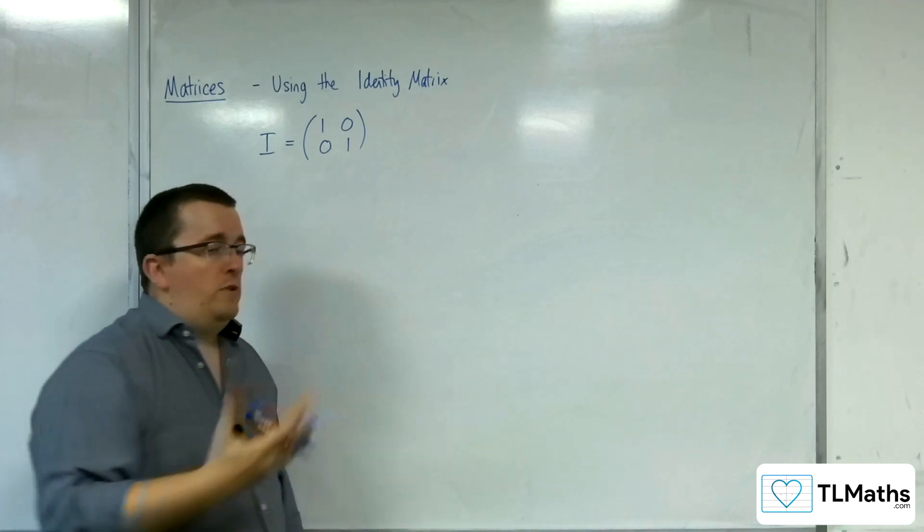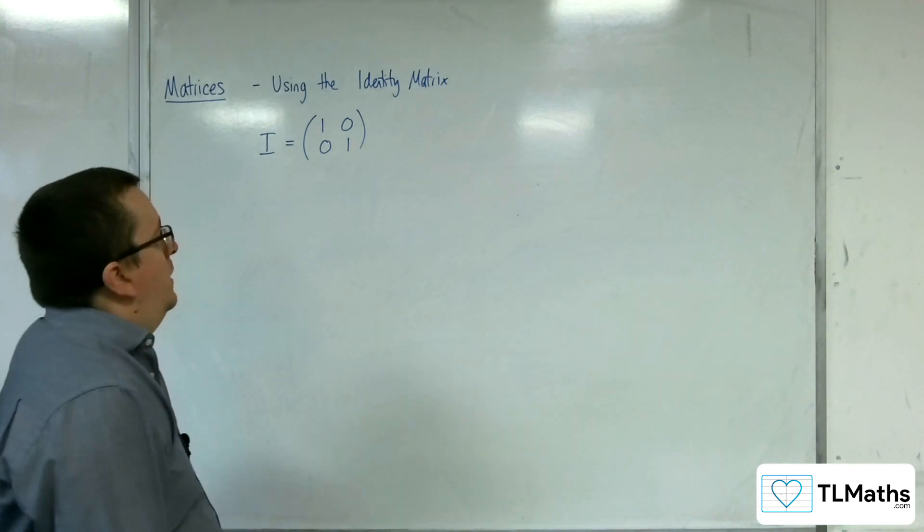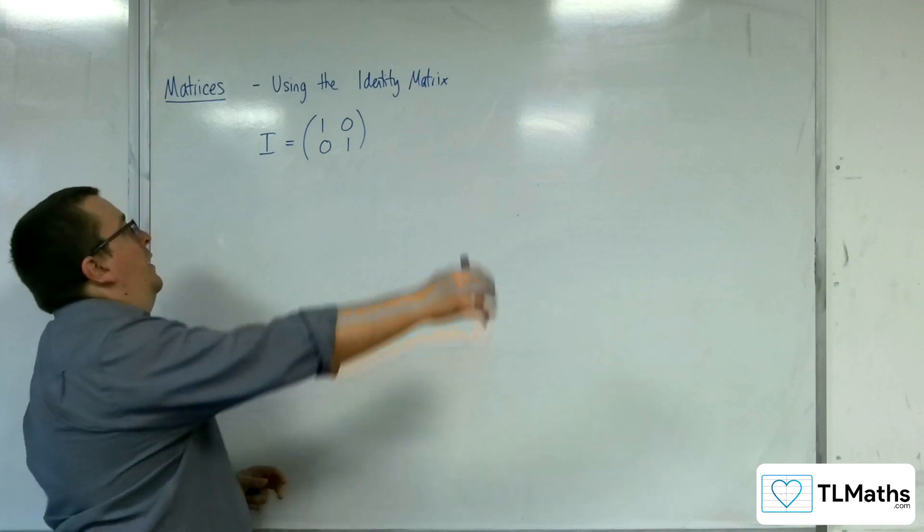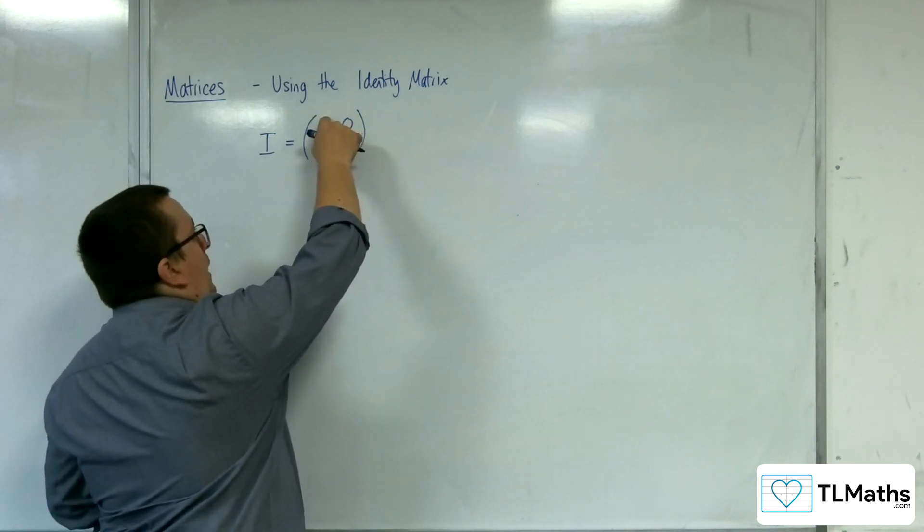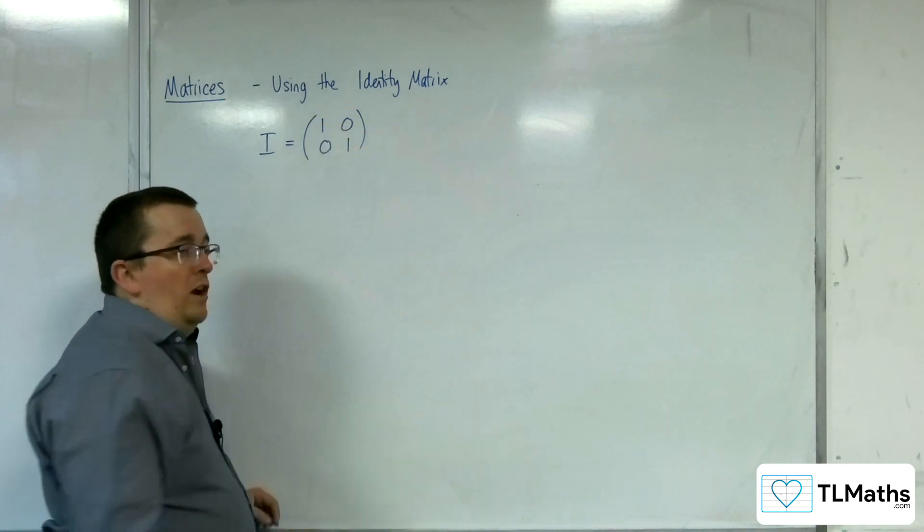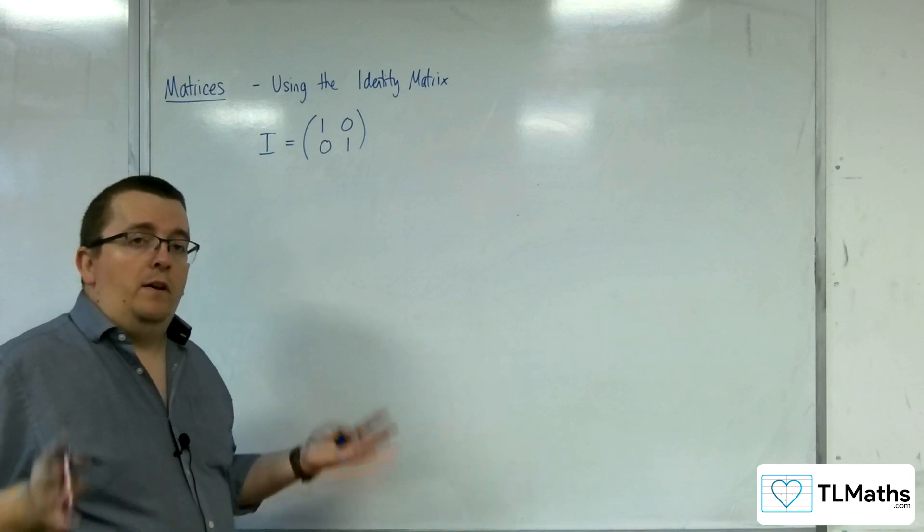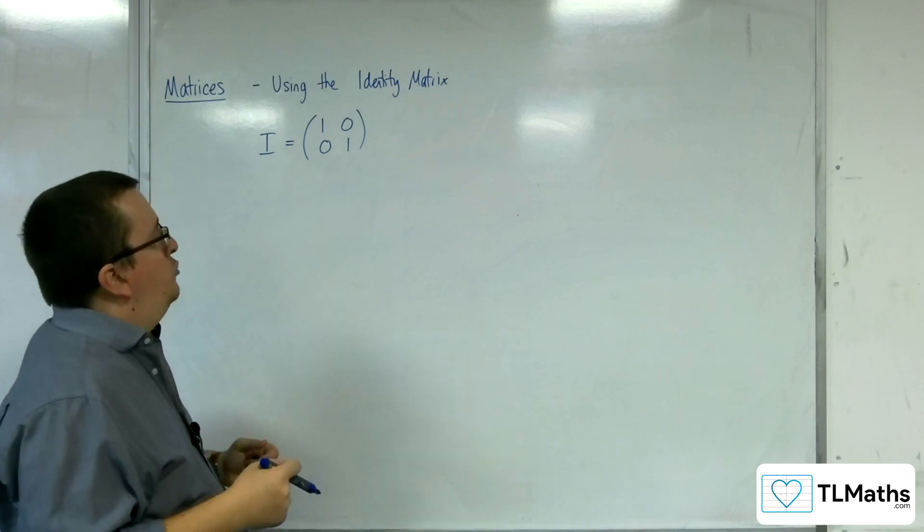For 3x3 or 4x4, etc., we're looking at a square matrix where the top left all the way through to the bottom right are all 1s, and all other entries or elements in the matrix are 0.